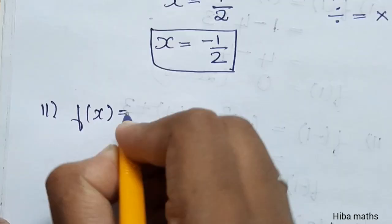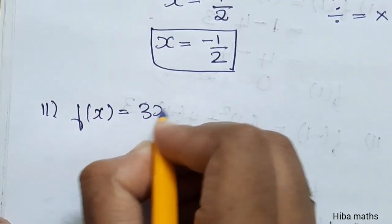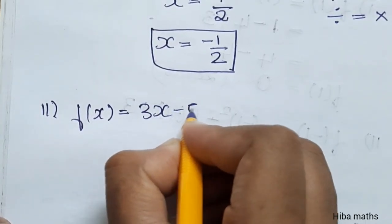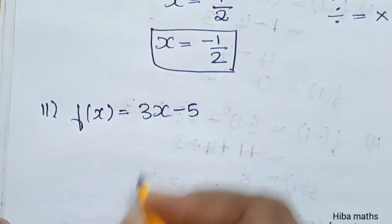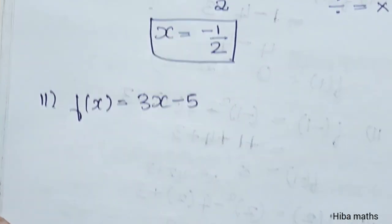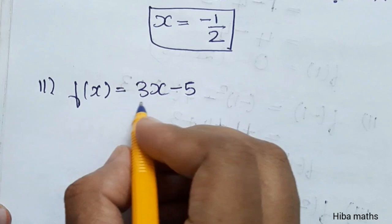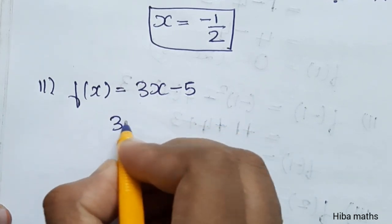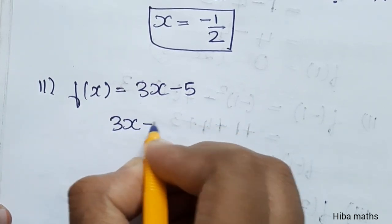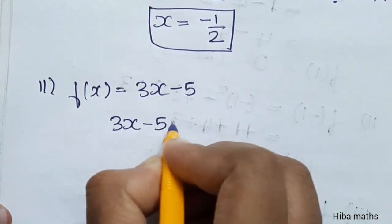f(x) = 3x - 5. If we can solve this, you can understand. First step: 3x - 5 = 0.